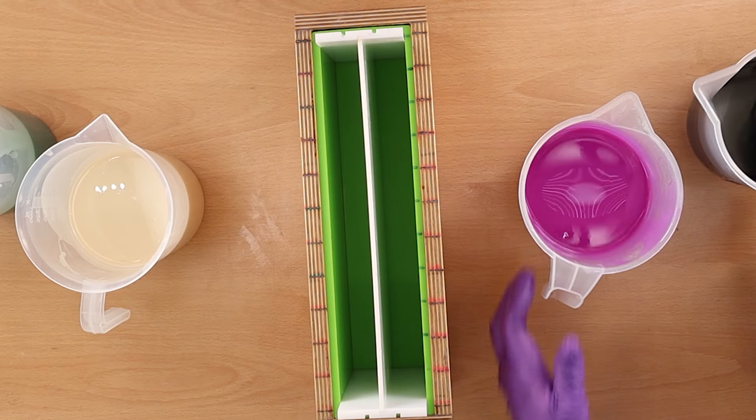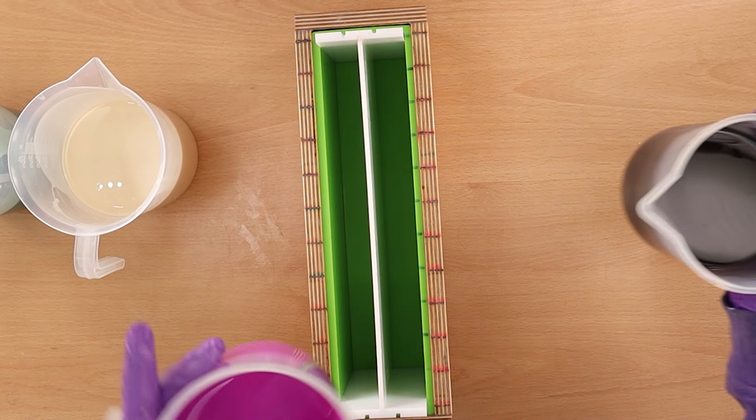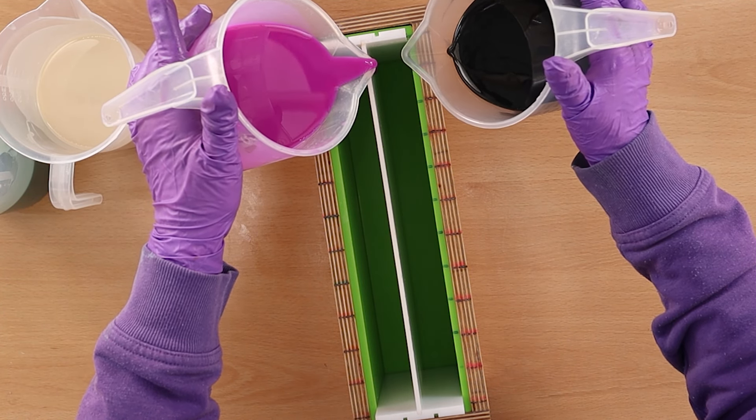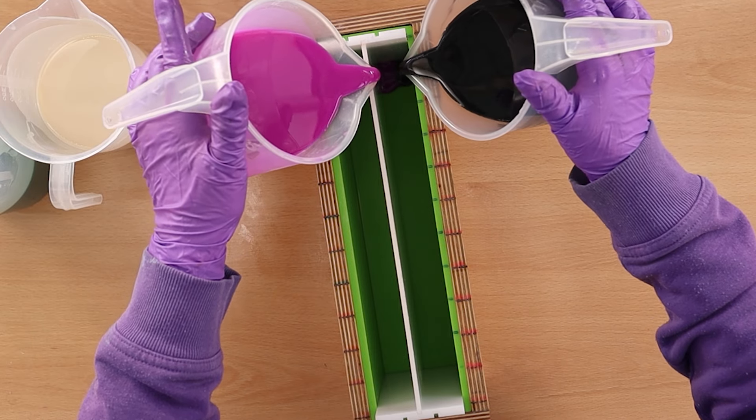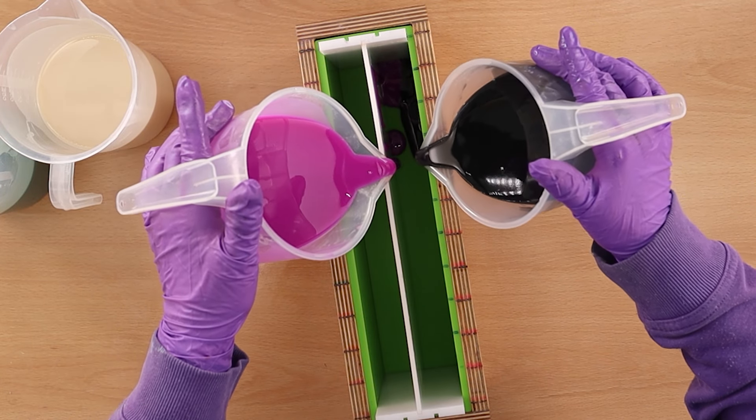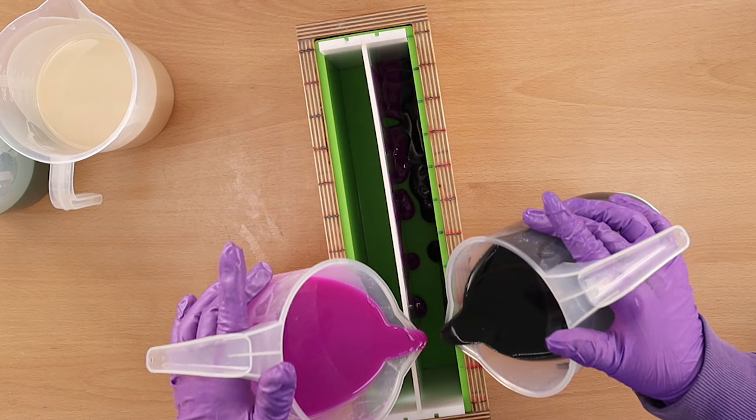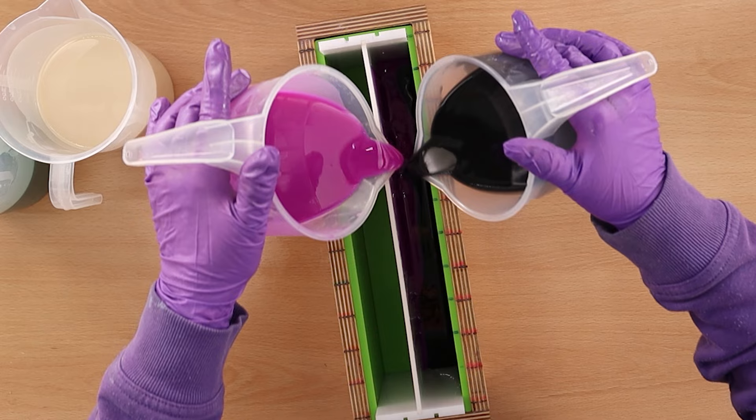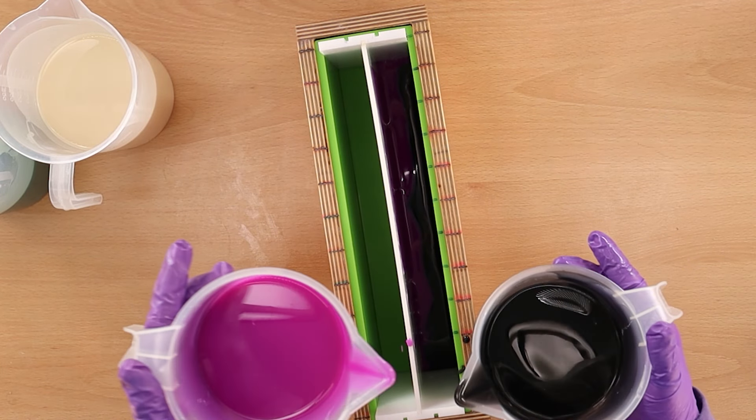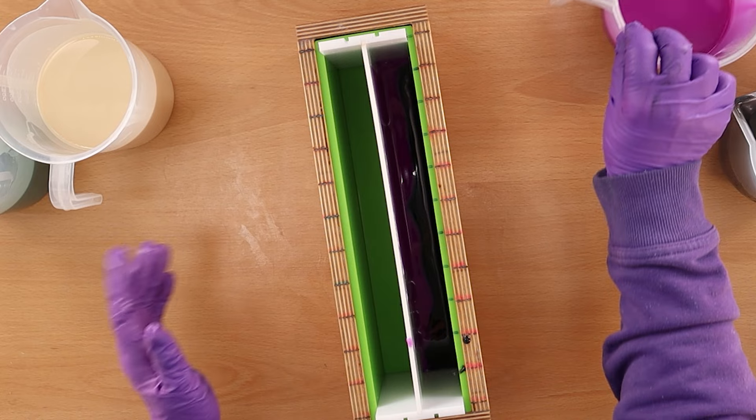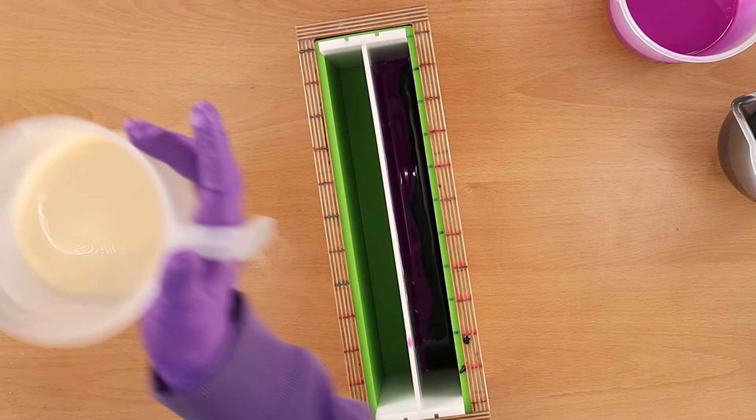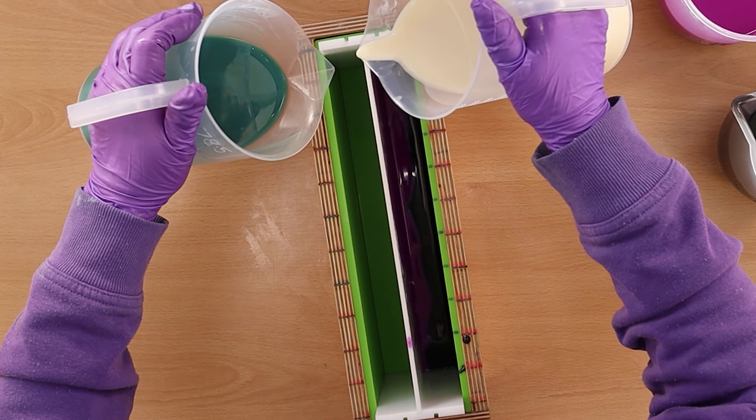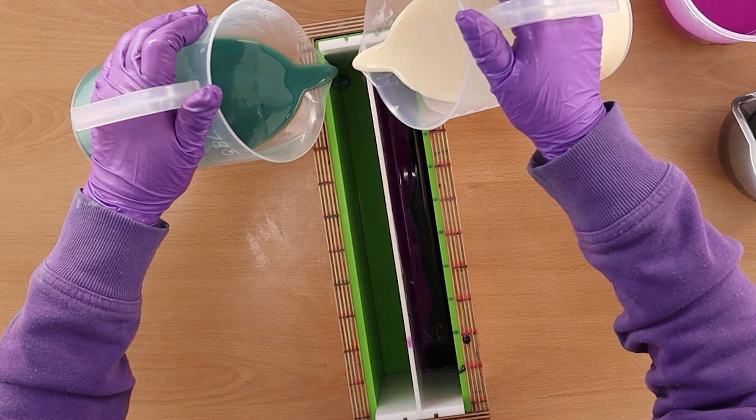So actually I'm going to get these in the order that I want them. So I am going to go in and just do a little bit of, I think this is the order I want them, the black and the purple together. I mean these lines aren't going to be as lovely and straight as they would be with dividers, but it seems to be going okay. And then the white and the Caribou Blue.